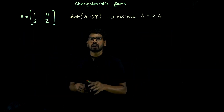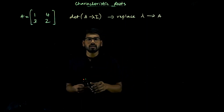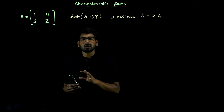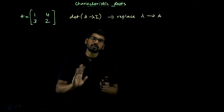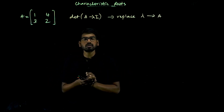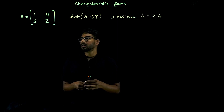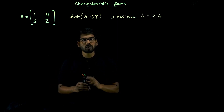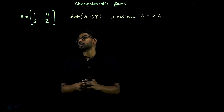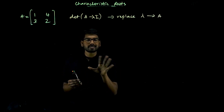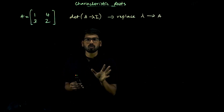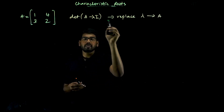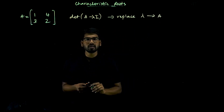Now the long method — the official method of finding the characteristic equation. This shortcut works for 2×2 matrices. The official method works for 2×2 and 3×3 matrices. The characteristic equation is the determinant of A minus lambda I, where lambda is replaced by A.